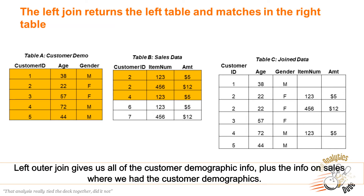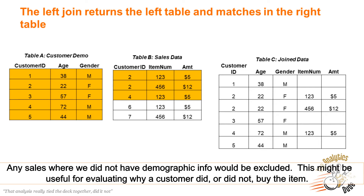Left outer join gives us all of the customer demographic info, plus the info on sales where we had the customer demographics. Any sales where we did not have demographic info would be excluded. This might be useful for evaluating why some customers did or did not buy.